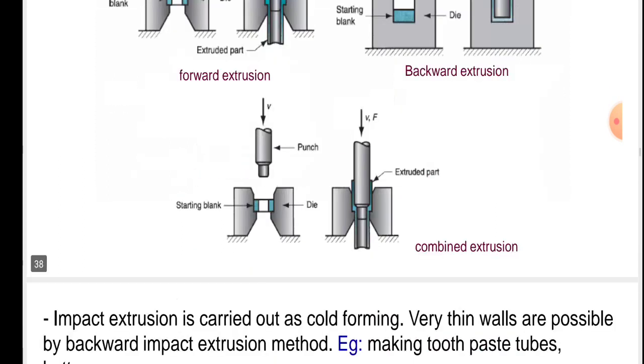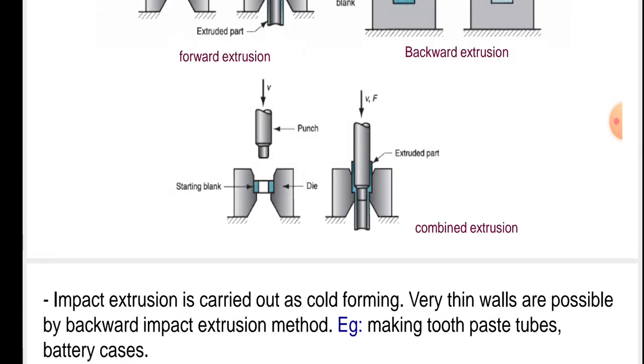In the next figure we will see combined extrusion, that is forward extrusion and backward extrusion. Starting blank and dies are given. The punch moves with velocity V on the die and workpiece, and the extruded part is produced.